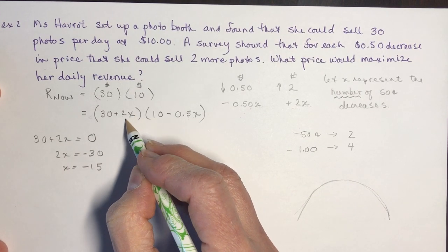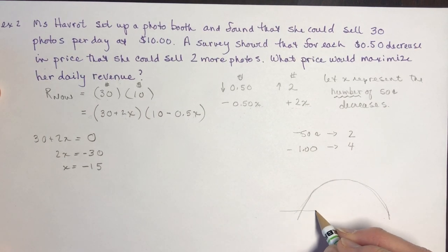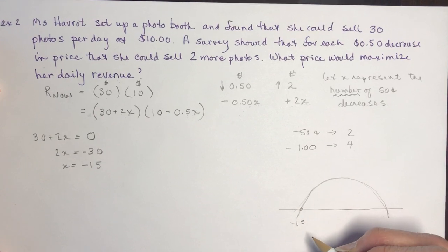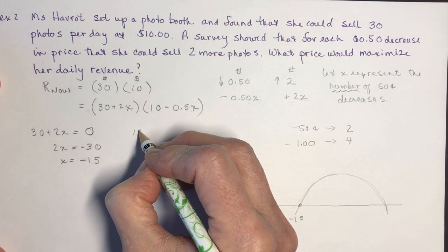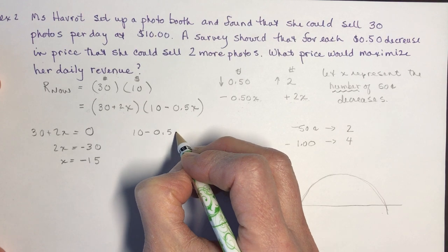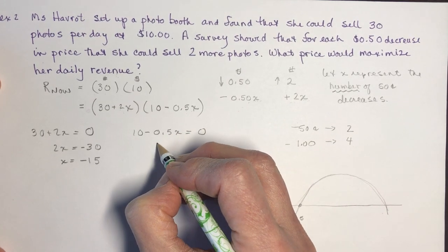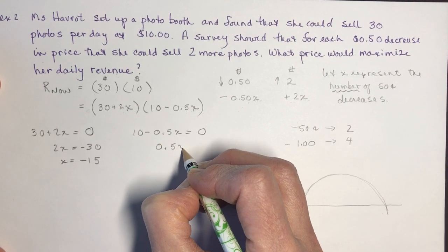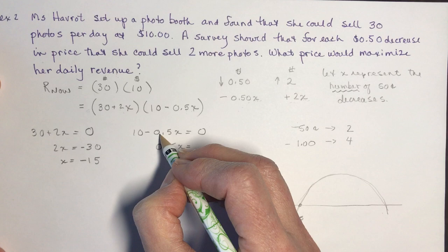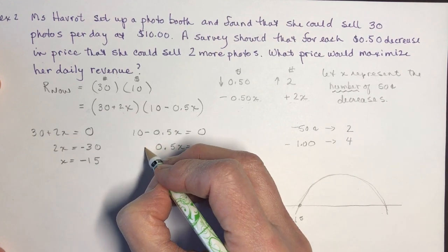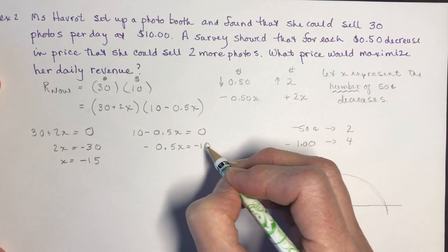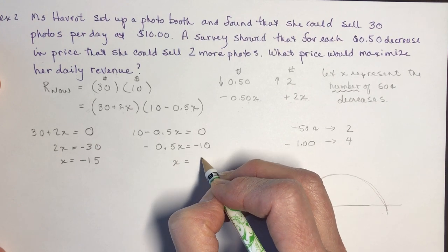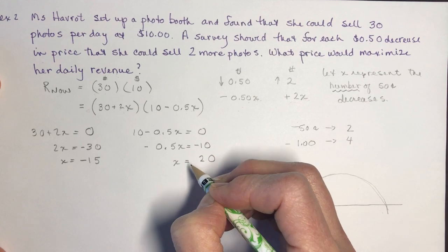Finding the zeros: 30 plus 2X = 0 gives X = -15. And 10 minus 0.5X = 0 gives X = 20. So the two zeros are -15 and 20.